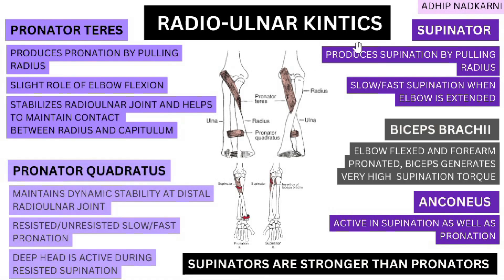Today we are going to cover the radioulnar joint kinetics, and the main motions are supination and pronation. Supination is created by the supinators — your supinator muscle, biceps brachii, and anconeus — whereas pronation is created by your pronator teres and pronator quadratus majorly. The supinators in general are stronger than your pronators, and this is determined with isometric testing.